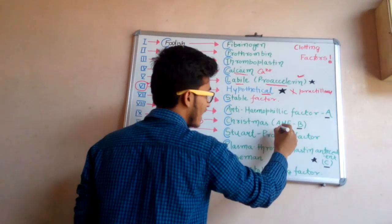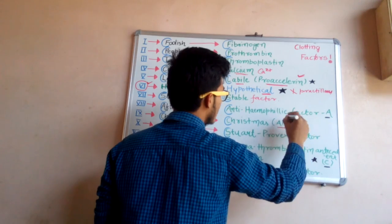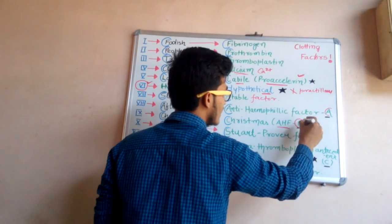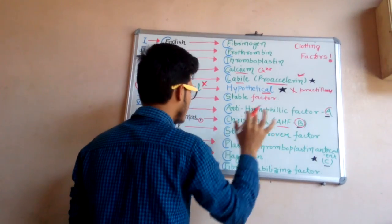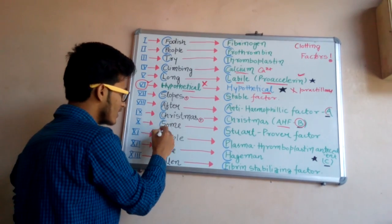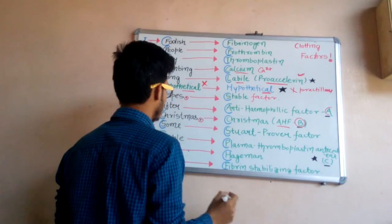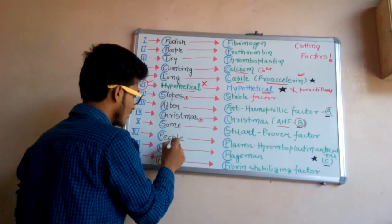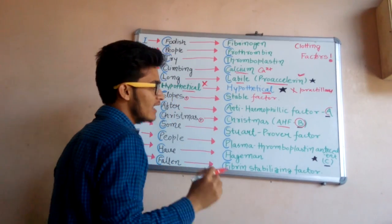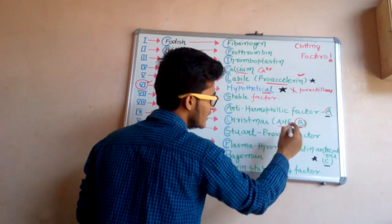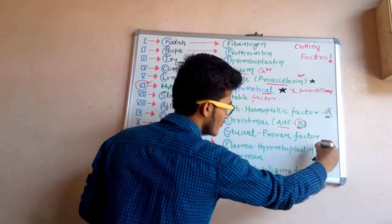'A' in 'after' means anti-hemophilic factor A. 'Christmas' simply means Christmas factor, which is also known as anti-hemophilic factor B. 'S' in 'some' means Stuart Prower's factor. 'P' in 'people' means plasma thromboplastin antecedent, which is anti-hemophilic factor C — this is very important from an examination point of view.